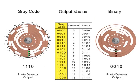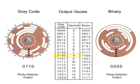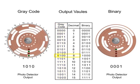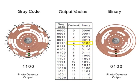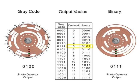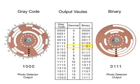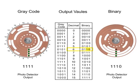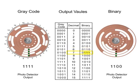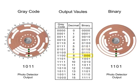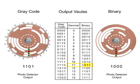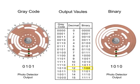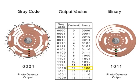Gray code is designed where only one bit changes at a time, contrary to a binary system where one or more numbers change in the word. By changing more than one number of the word at a time in the binary system, the possibility of positioning errors is greater, leaving gray code the preference in precision applications.